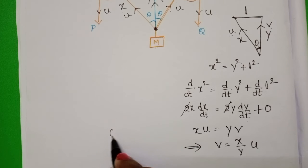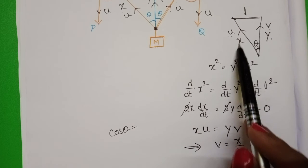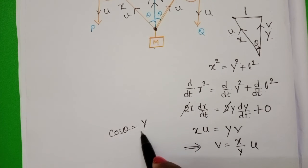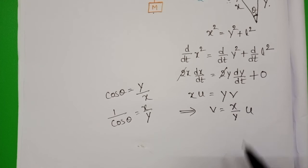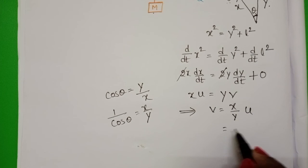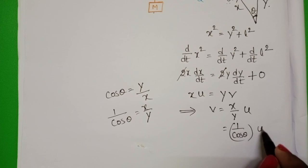From this triangle, cos theta is equals to adjacent side by hypotenuse. Here adjacent is Y, hypotenuse is X. So cos theta is equals to Y by X. 1 by cos theta is equals to X by Y. So in place of X by Y substitute 1 by cos theta. 1 by cos theta into U.